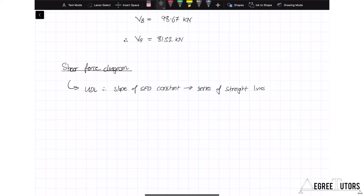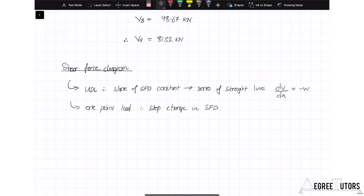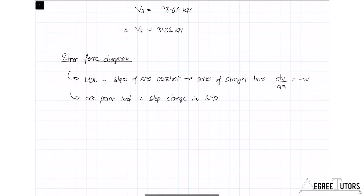This is based on the relationship dV/dx = −w, where w is the distributed load magnitude — a constant distributed load gives a constant slope. We also noted one point load, which means there'll be a step change in the shear force diagram. At this point we can go ahead and sketch out the shear force diagram.